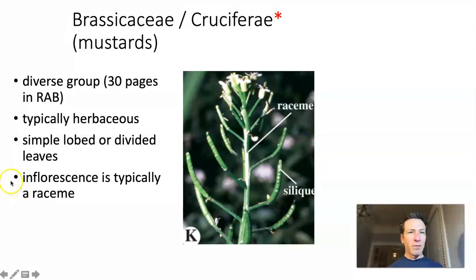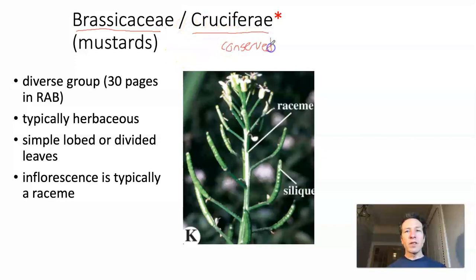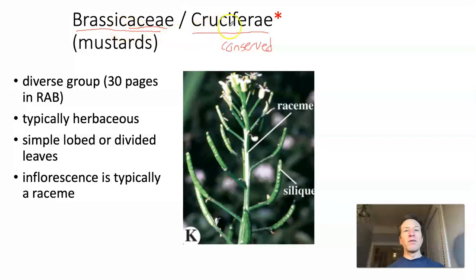Our next family is Brassicaceae, also known as Cruciferae. This is one of those unusual families with two formally accepted names. Brassicaceae is the more modern name, but Cruciferae is a conserved name because it was so well established when modern naming systems were developed. All modern family names end in -aceae and are named after a genus within the family — here, Brassica. You need to know both names.